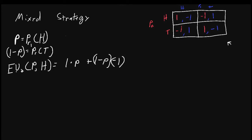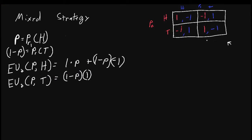We can do the same thing to find player two's expected utility when player one randomizes with probability p and player two always plays tails — plays tails with probability one. One minus p percent of the time he'll earn one, because one minus p percent of the time player one will play tails, and if player two is playing tails he gets a reward of one. However, p percent of the time he'll get negative one, because player two plays tails but player one plays heads with probability p.